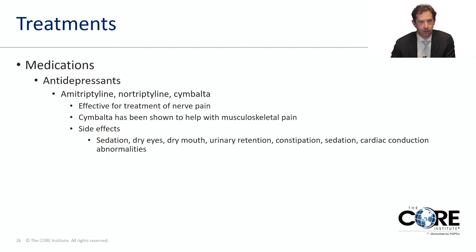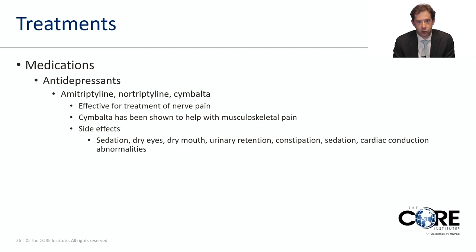There are also anti-depressant medications used here not for depression but for nerve-related pain. Common ones include Amitriptyline, Nortriptyline, and Cymbalta, which has been shown to help with musculoskeletal pain. These can be helpful for patients with comorbid depression, treating both pain and depression simultaneously. Side effects include sedation, dry eyes, dry mouth, urinary retention, constipation, and in severe cases cardiac issues, but they are generally fairly safe medications.